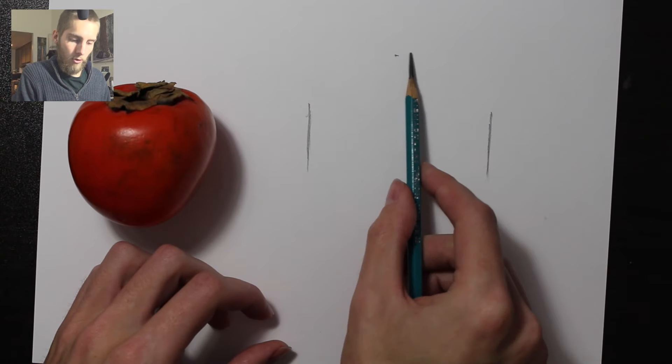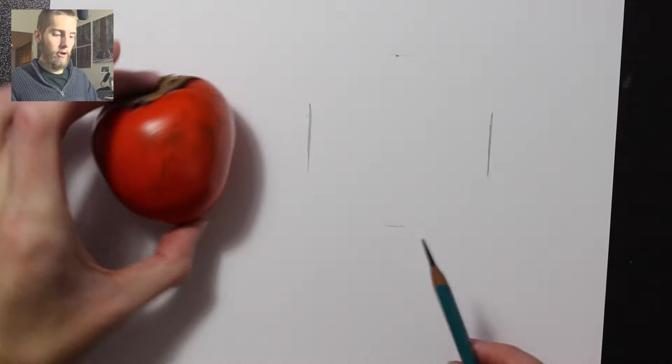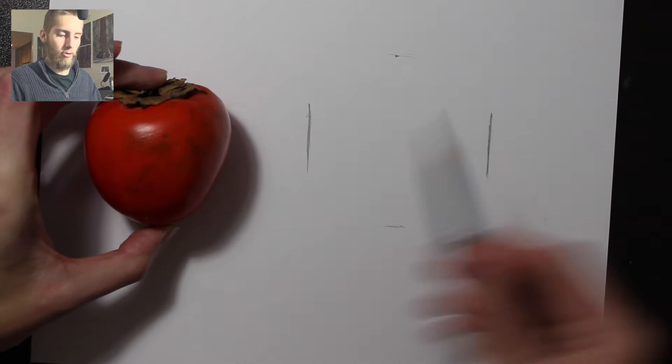What I just did was create a square because now the height is exactly the same as it is wide. But we know that the persimmon is taller than it is wide.